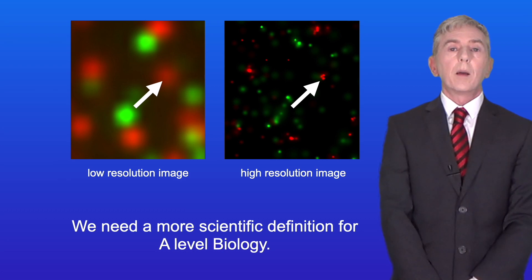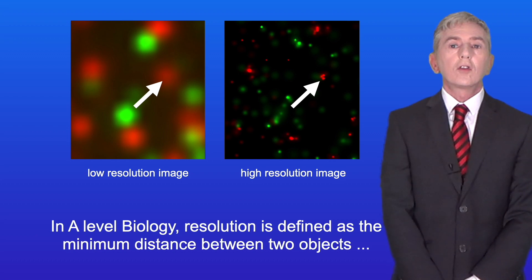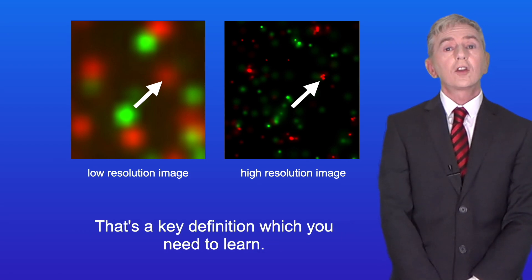Now we need a more scientific definition for A-level biology. In A-level biology resolution is defined as the minimum distance between two objects where they can still be seen as two separate objects and that's a key definition which you need to learn.